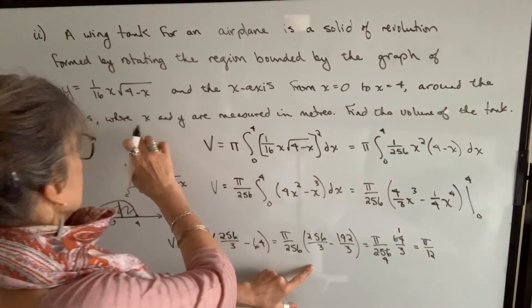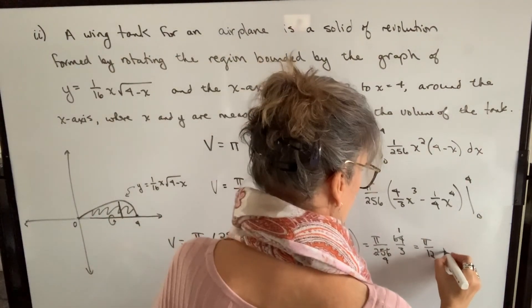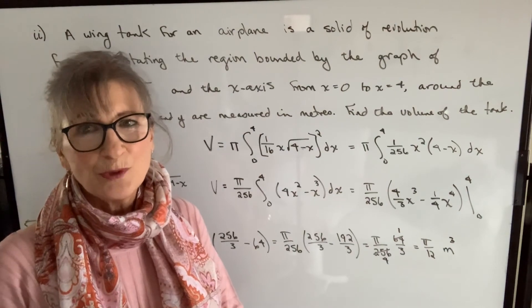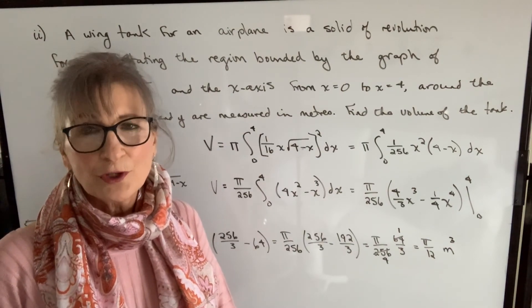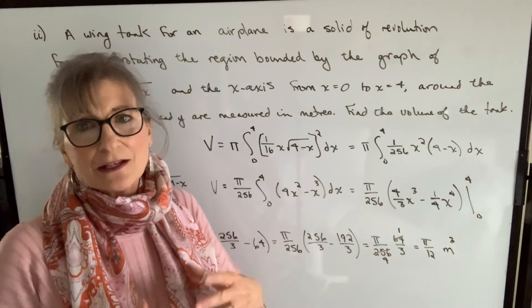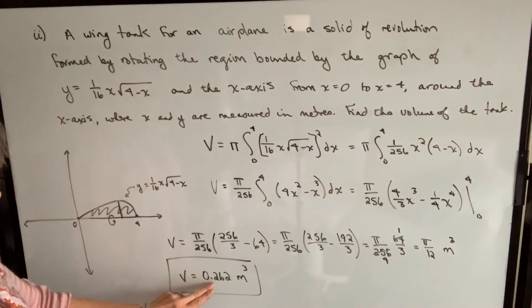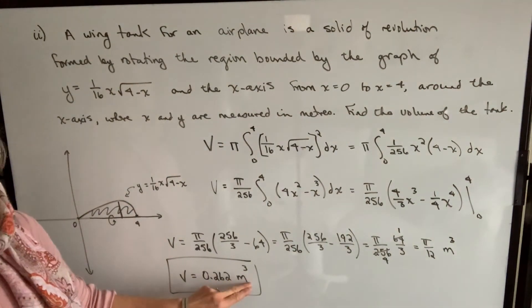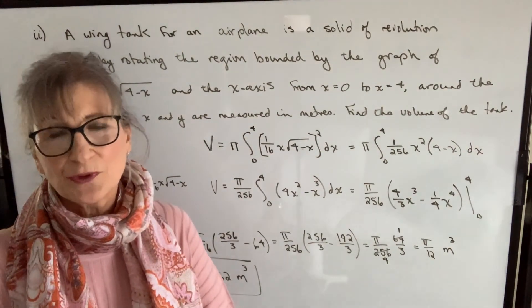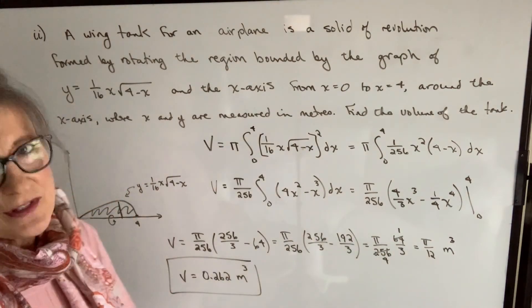And my unit is, everything is measured in meters and it's a volume, so it will be cubic meters. Now because this is an actual application and we want to know what the volume of that tank is, I probably wouldn't leave it like that. I would actually take pi and divide by 12. And when I do that division, I get 0.262 cubic meters. And then we can find out how many liters that holds because we know that every cubic meter holds 1,000 liters. So that would be 262 liters.